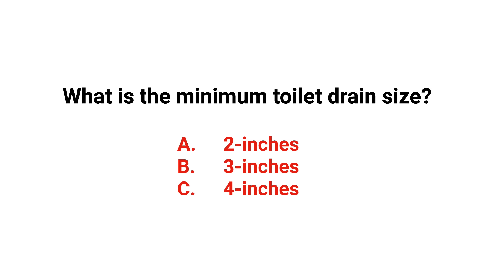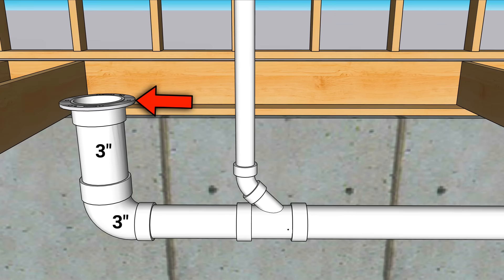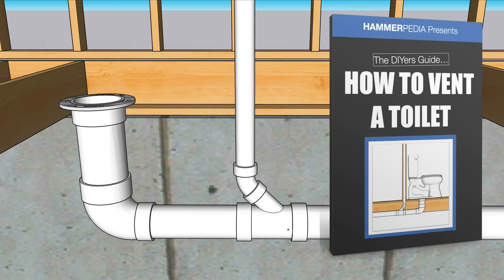Let's talk about the toilet's drain size. Regardless of your plumbing code, the minimum drain size for a toilet is three inches. That means all this can be three inches — this could be a four by three closet flange and a three inch 90 and still be up to code. In the free guide you'll see several examples of toilets plumbed entirely in three inches.